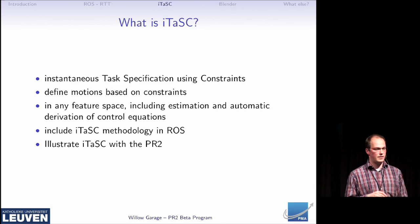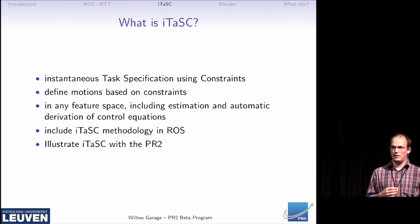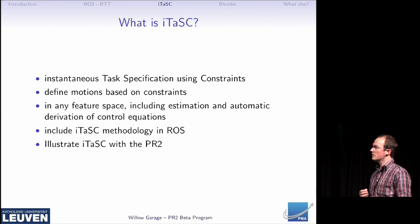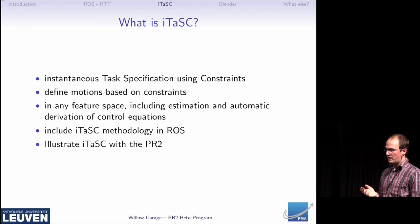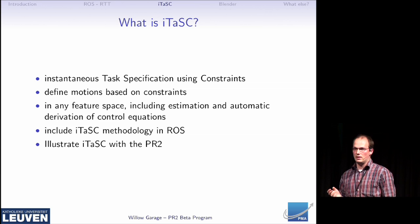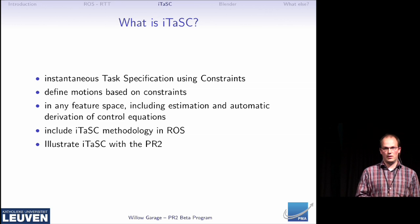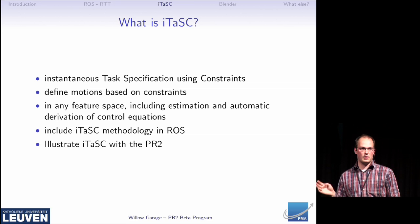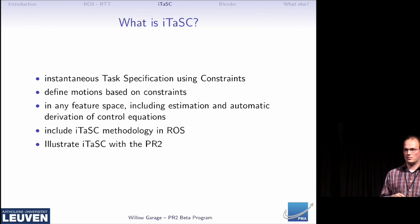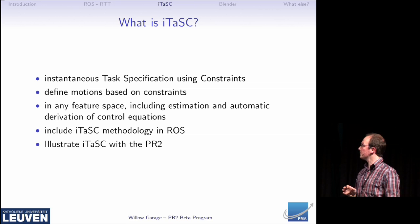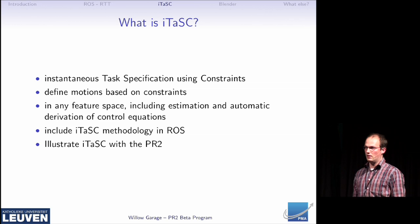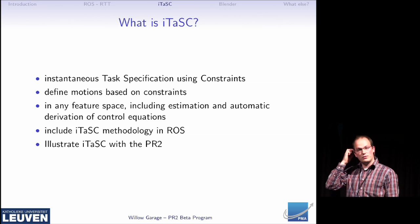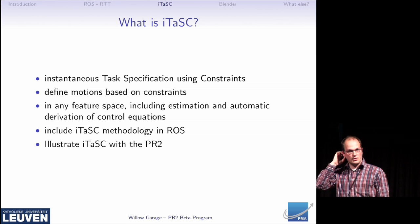The second big part of our proposal is ITASC. What is ITASC? ITASC is a way of specifying tasks that are complex. It allows you to define motions in different feature spaces — it can cover geometrical sensor spaces like camera and laser scan — and you can define tasks only based on constraints over all those feature spaces. We're going to include ITASC into ROS so that it is freely available, and we're going to illustrate the power of it by doing some demos with the PR2.